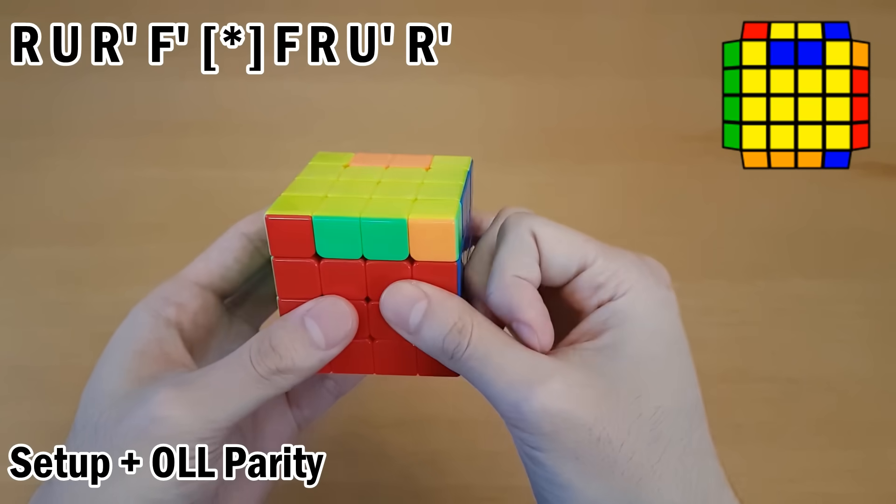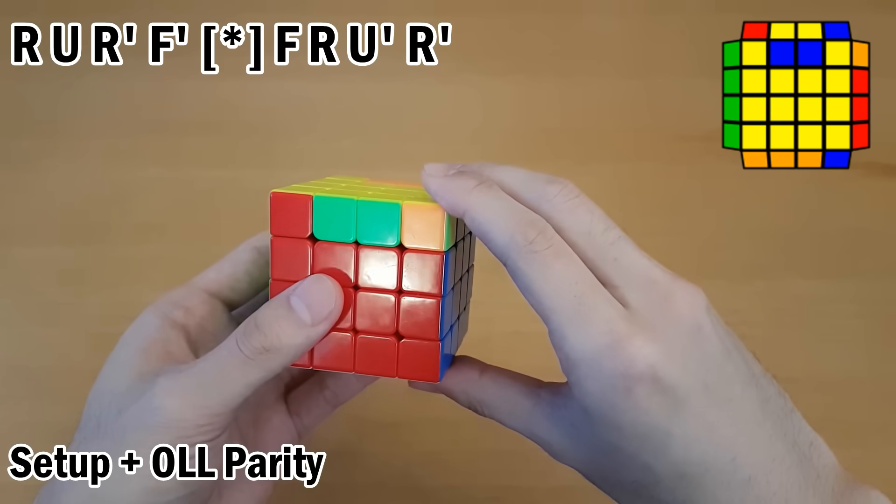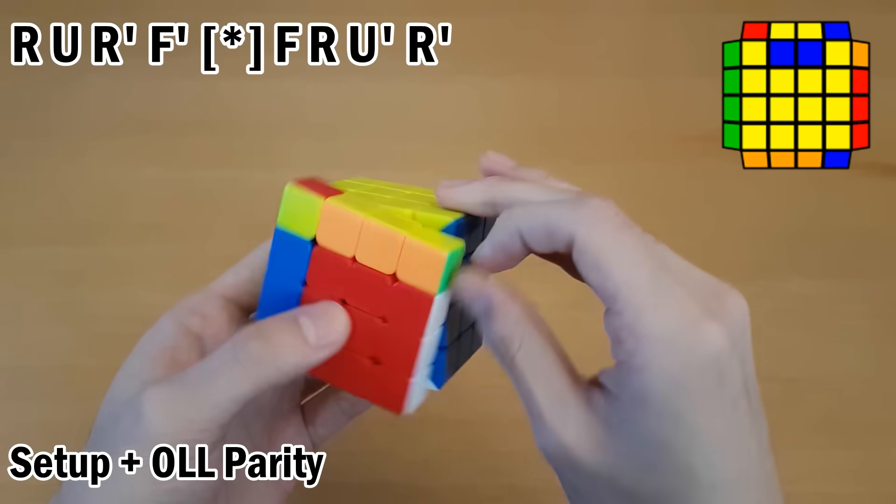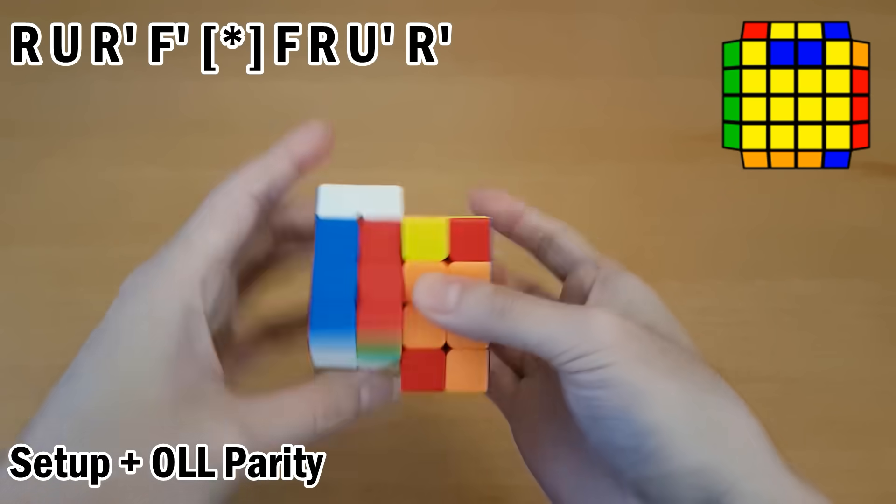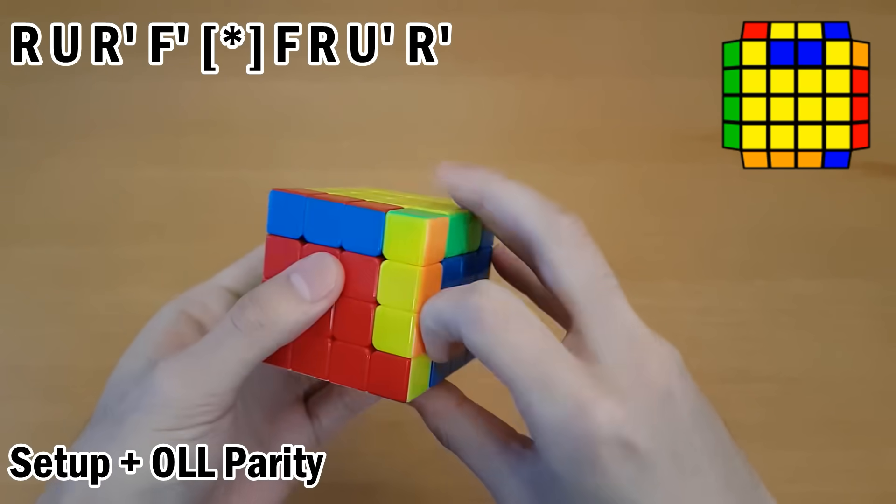Next, if you get this one from the back, there are a few ways you can do it. One is with the first four moves of a J perm, so R U R' F', OLL Parity, and then undo those four moves.